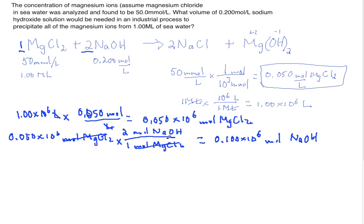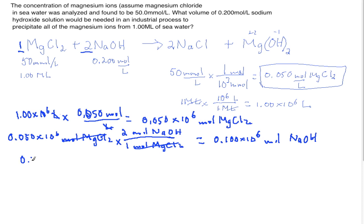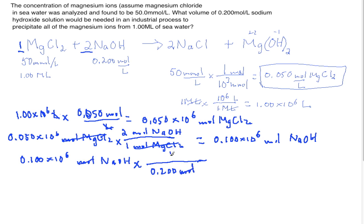Now, to determine the volume of sodium hydroxide, we divide the calculated moles of sodium hydroxide by its concentration. We have 0.100 × 10⁶ moles of sodium hydroxide divided by 0.200 moles per liter — the moles cancel out — giving us 5.00 × 10⁵ liters of sodium hydroxide.